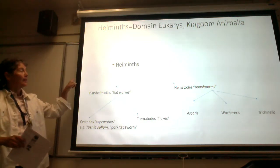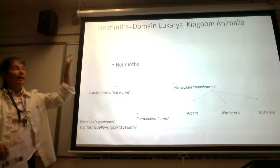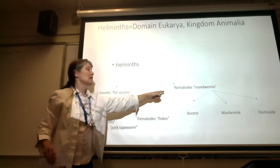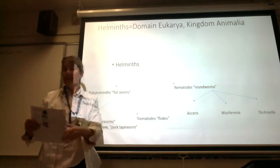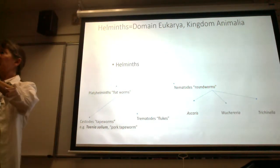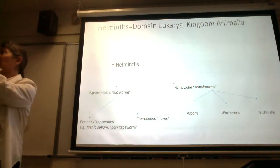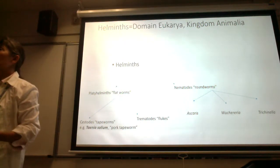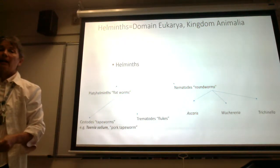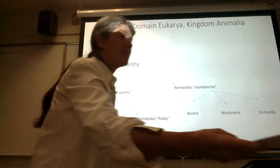And then, folks, we're going to back up to all the helminths, and a really big group are the so-called nematodes. If we took a nematode and cut it in cross-section, the body looks round, and hence a common name for nematodes are roundworms. Most of our helminths are going to be roundworms.